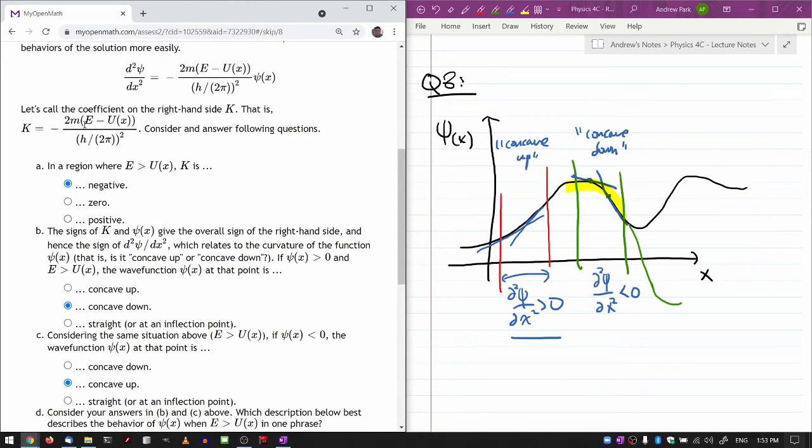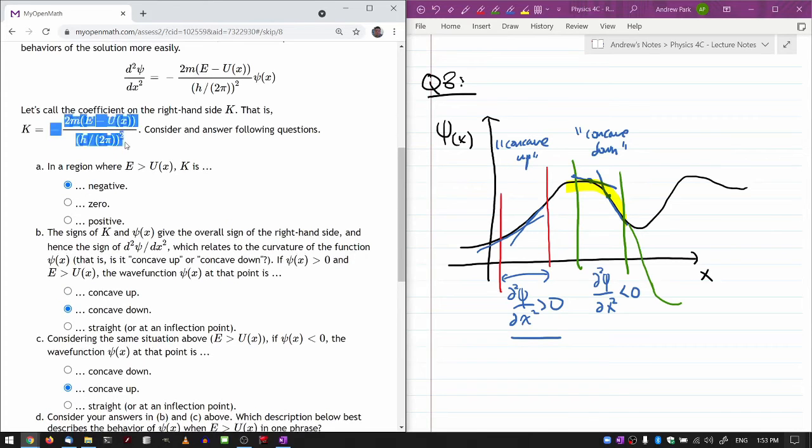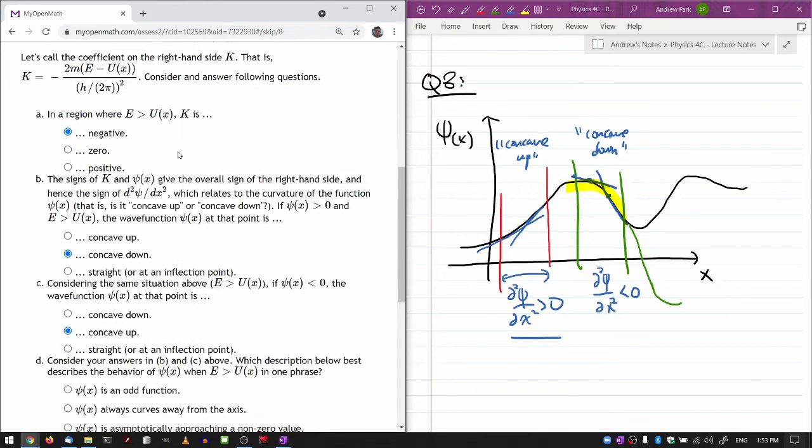If E is less than U, then this k as a whole is positive, which would mean if psi of x is greater than zero, then it would be concave up, almost like this portion of the wave function.